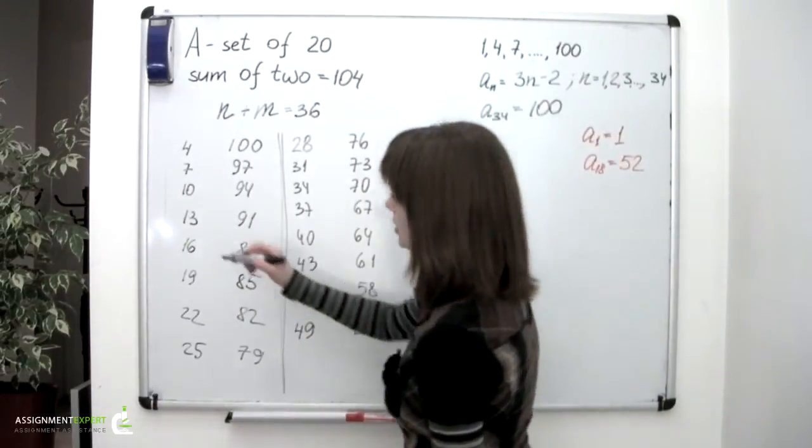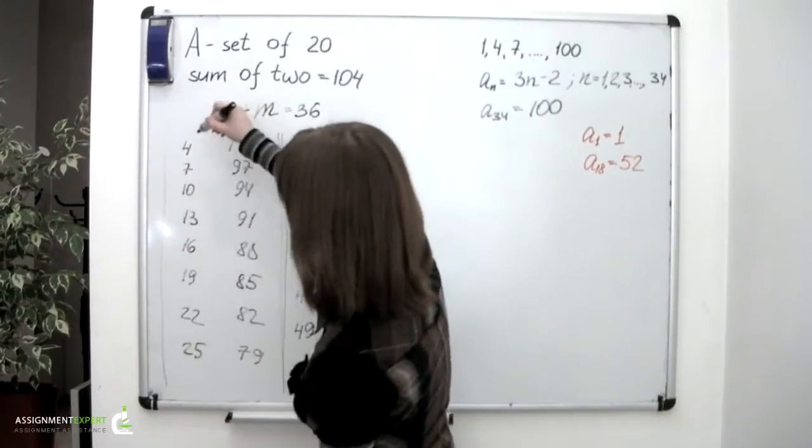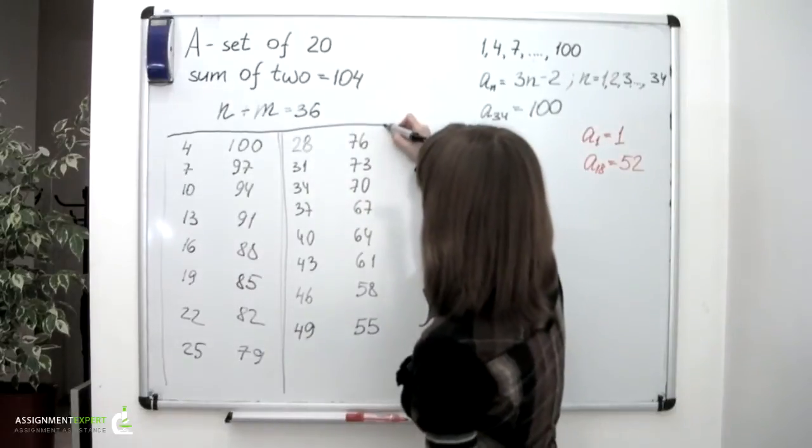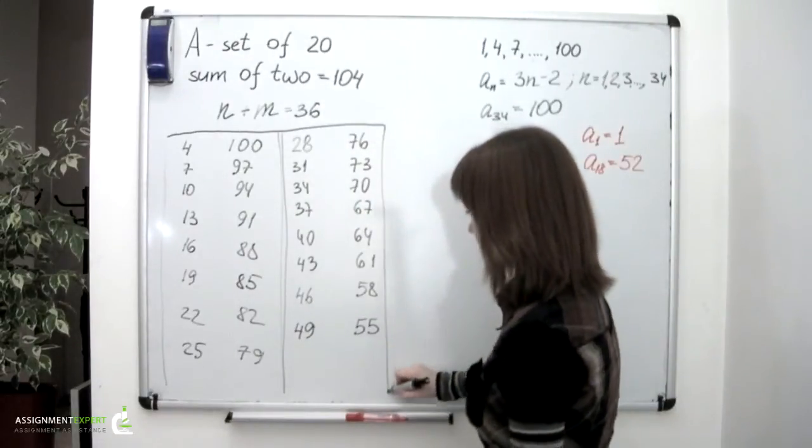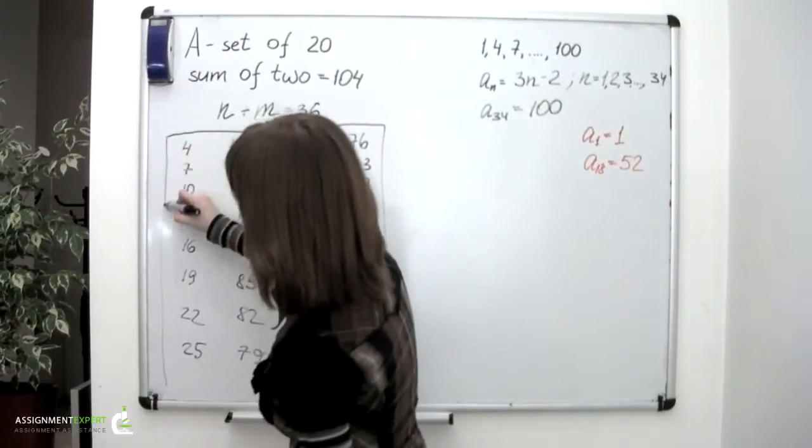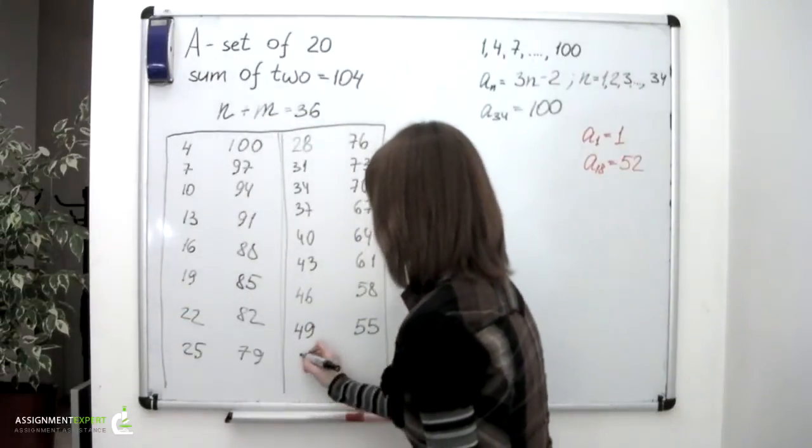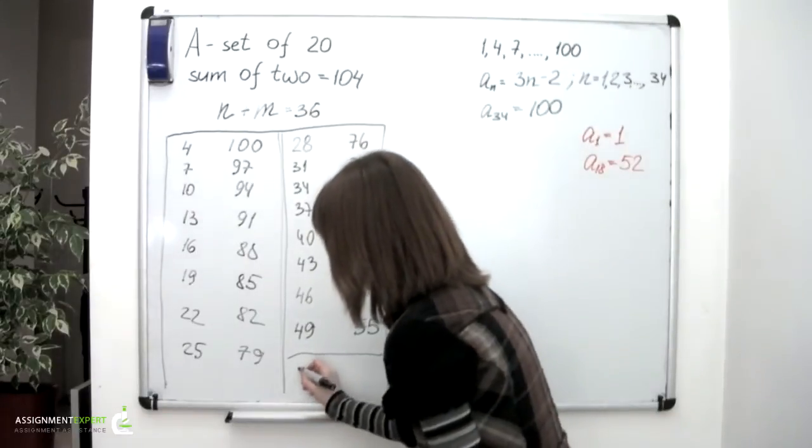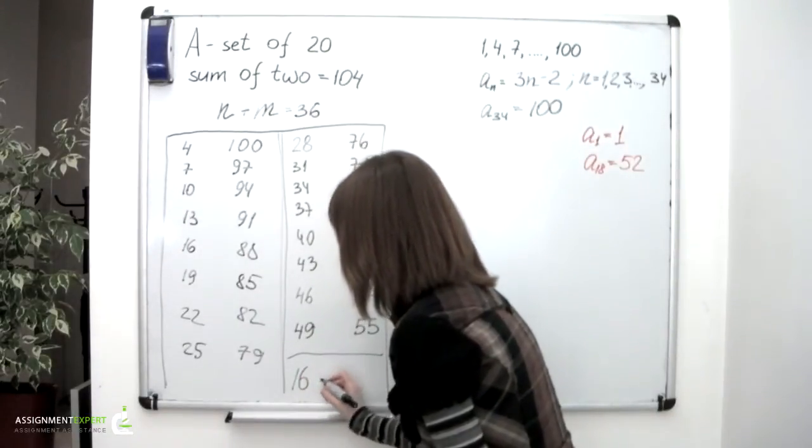So these are the 16 pairs of integers which give 104 if added. We have 16 pairs.